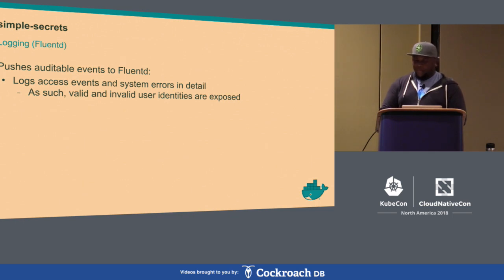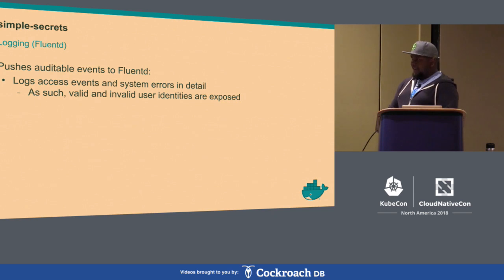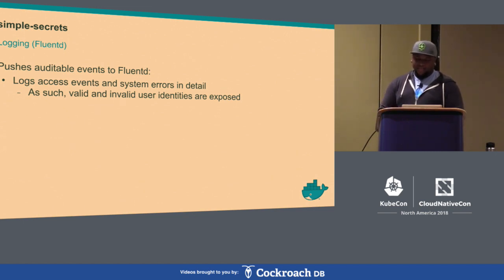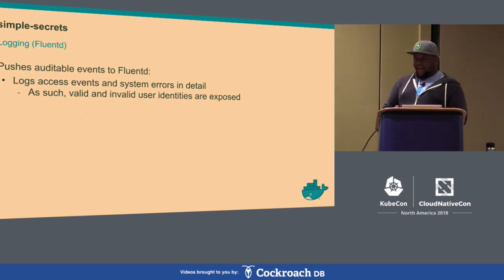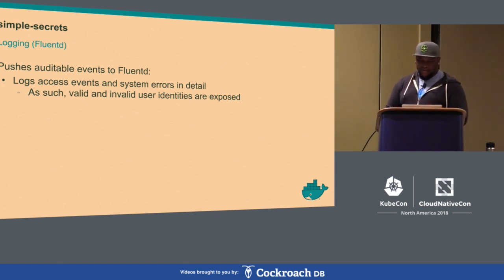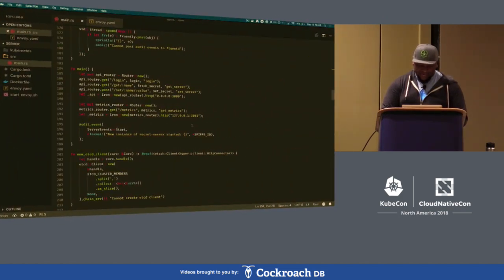The app also implements FluentD logging, which is a little different from Prometheus. Prometheus is a pull service — we create an endpoint for Prometheus to hit as part of a scrape on a configurable interval. FluentD is different: we actually push events to FluentD as part of our configuration. This example app pushes auditable events like access events and system errors. As a result, valid and invalid user identities are exposed, which makes log aggregation and analysis interesting but makes the log contents particularly vulnerable.